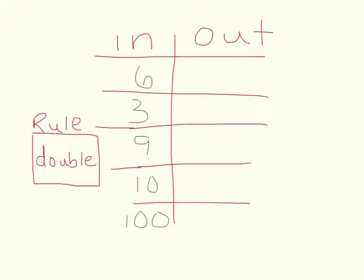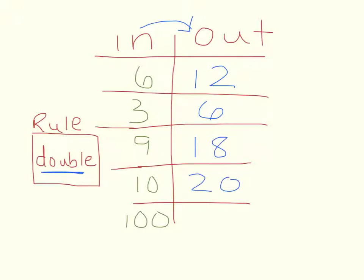So let's look at doubling in an in and out chart, which you may see in your math boxes. I have my in and out chart created. You can see I have the numbers filled in on the inside, but we need to figure out the numbers on the outside. The rule for this in and out chart is to double — we double the numbers on the inside to get the numbers on the outside. 6 doubled is 6 plus 6, which is 12. 3 doubled is 6. 9 doubled is 18. 10 doubled is 20. 100 doubled is 200.